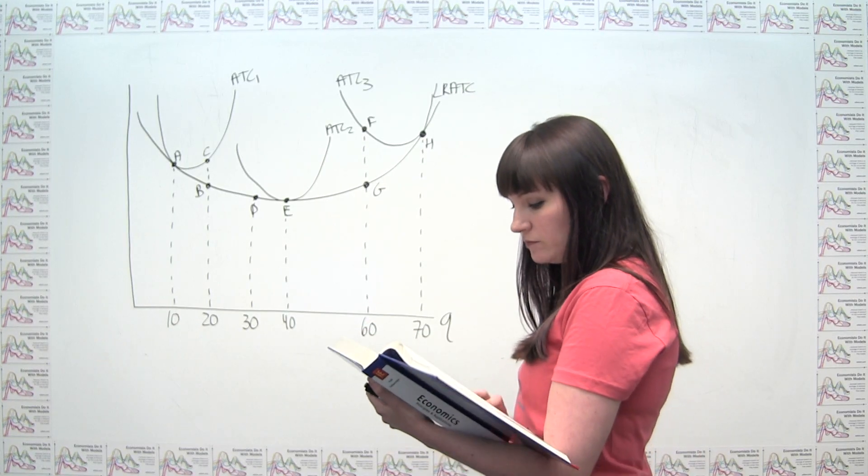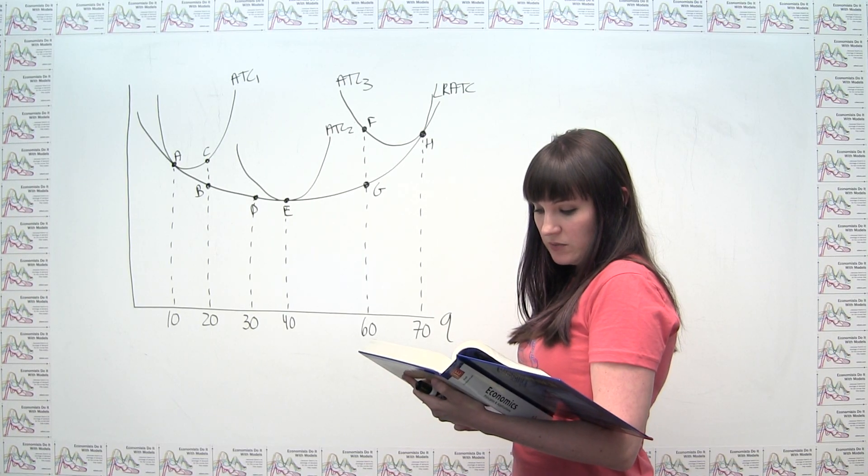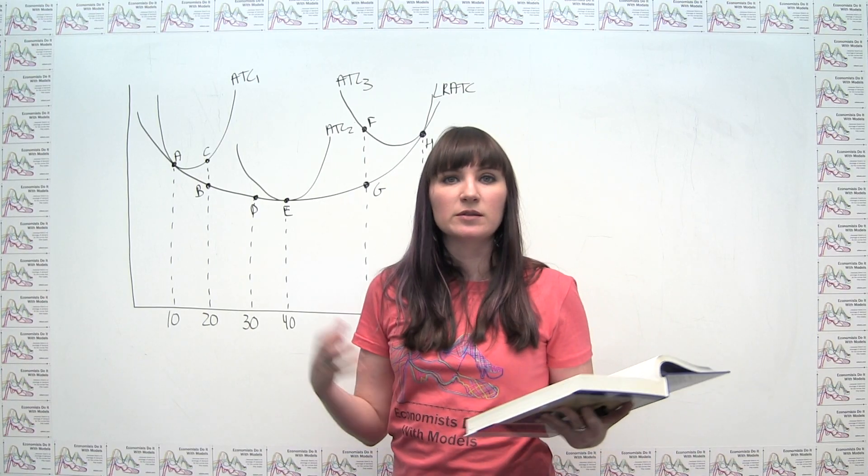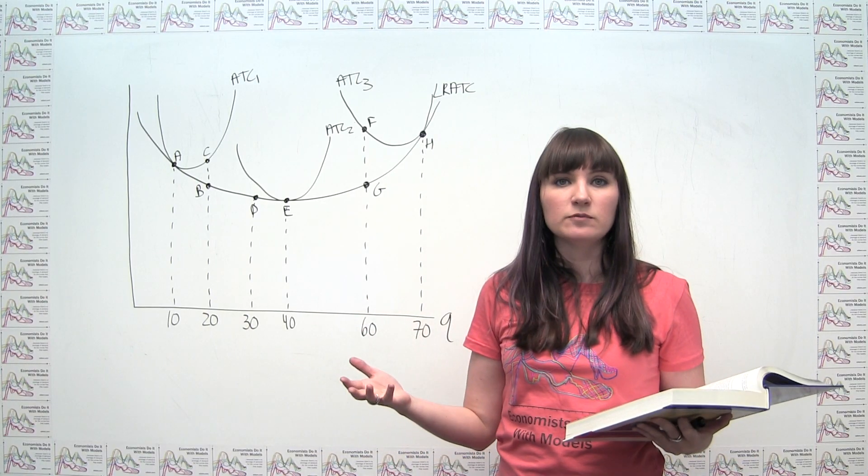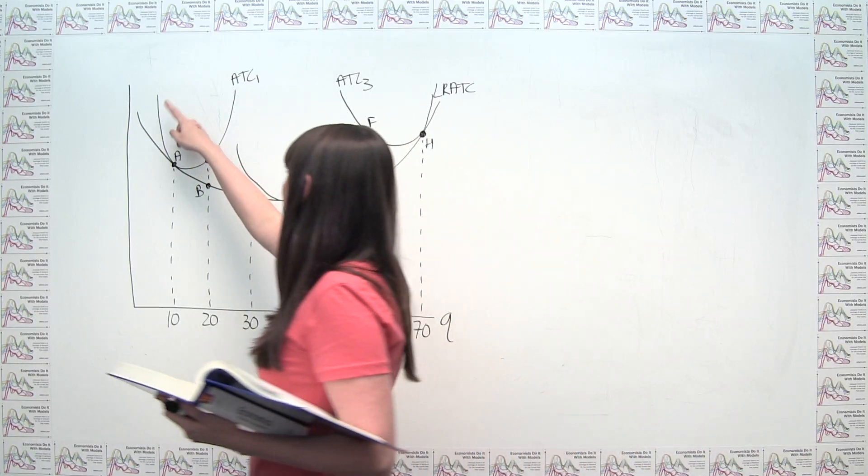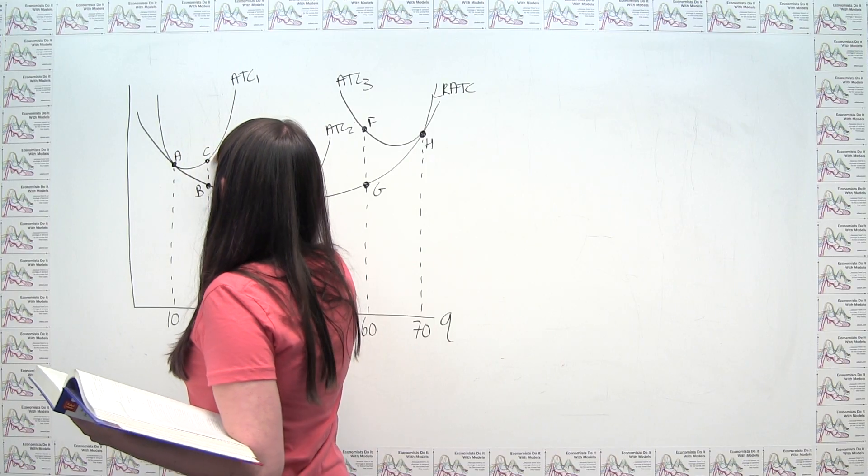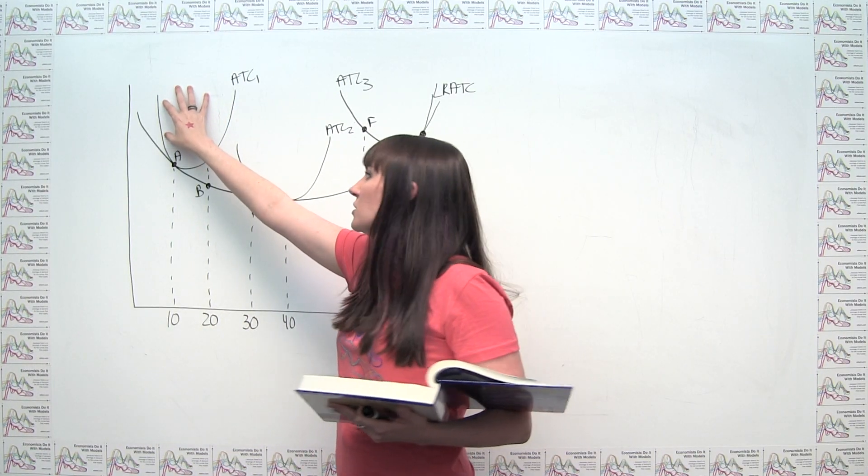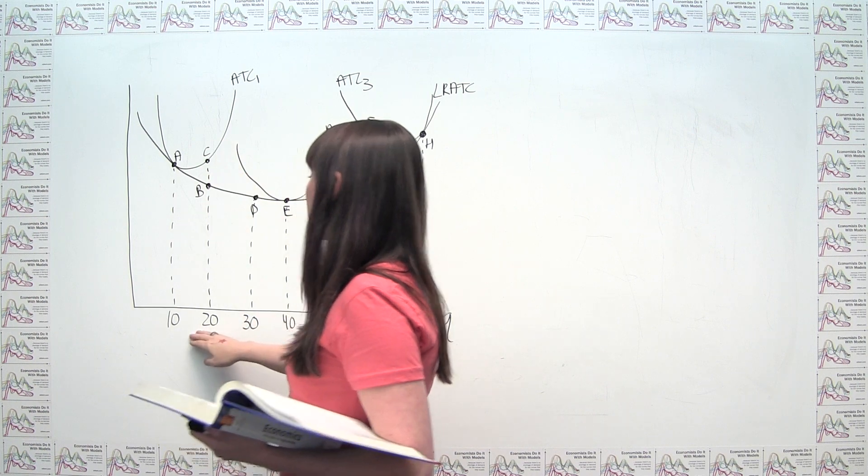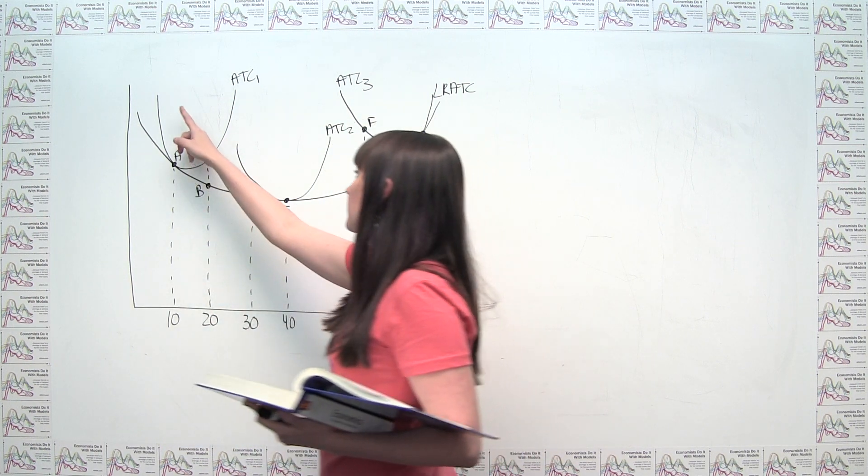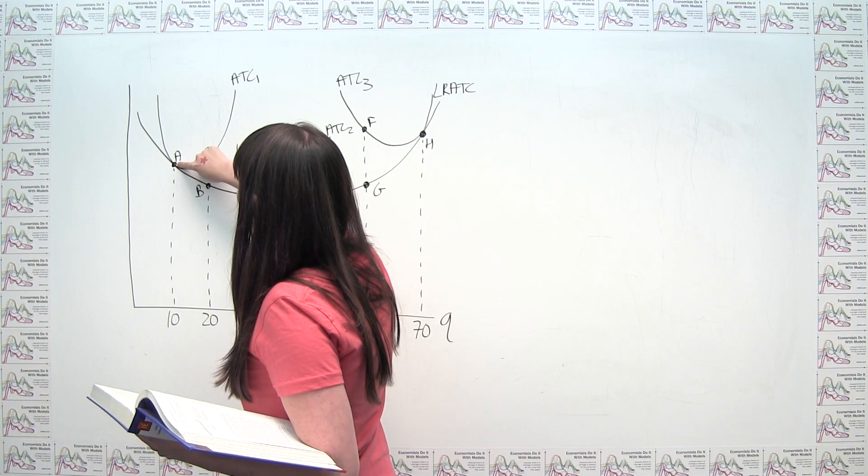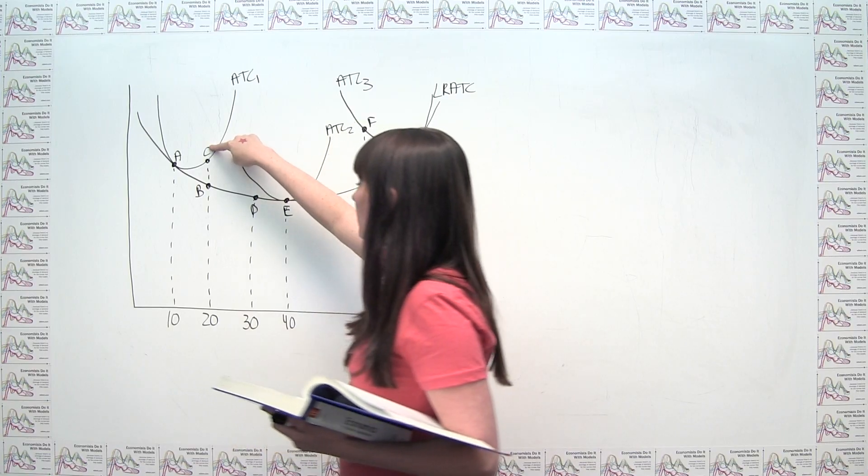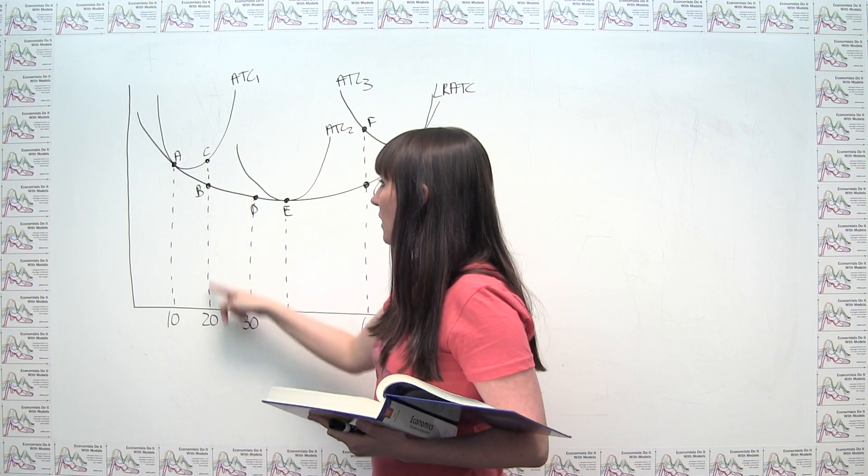So back to the question, which point will likely illustrate Ludmila's cost situation for the near future? Well, near future means that we have a reasonably short run planning horizon. So in the near future, Ludmila's probably stuck on this average total cost curve here. She's stuck with a particular size of factory. So if she wants to increase her production output to 20 units, she's stuck on this same curve. And she says, okay, well, now rather than being at my average total cost at 10, I'm at this average total cost at 20, and I'm actually going to be on this point C here.